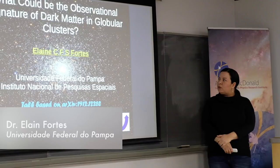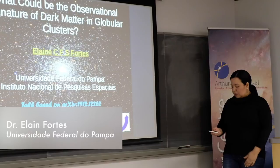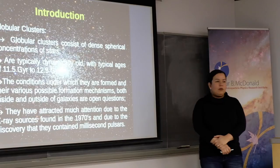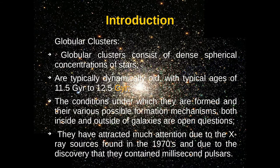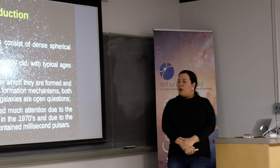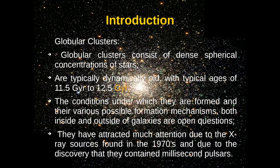The title of the paper is 'What could be the observational signature of dark matter in globular clusters?' What motivated us to do this paper? We know that globular clusters consist of dense concentrations of stars with a typical diameter of 30 parsecs. They belong to the list of the oldest astrophysical objects, with typical ages of 11.5 to 12.5 giga-years. The conditions under which they formed and the various possible mechanisms for their formation are both open questions.